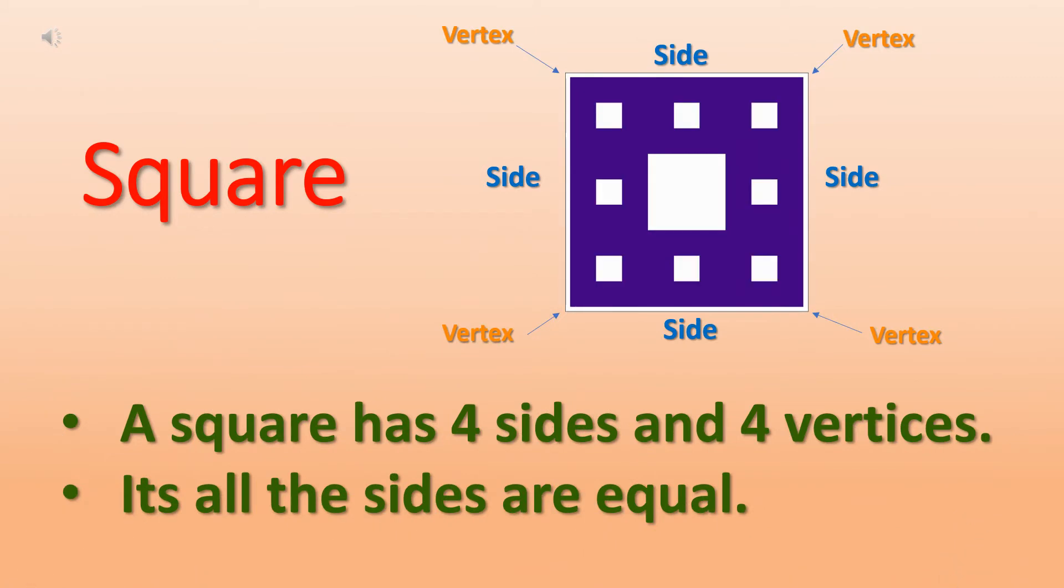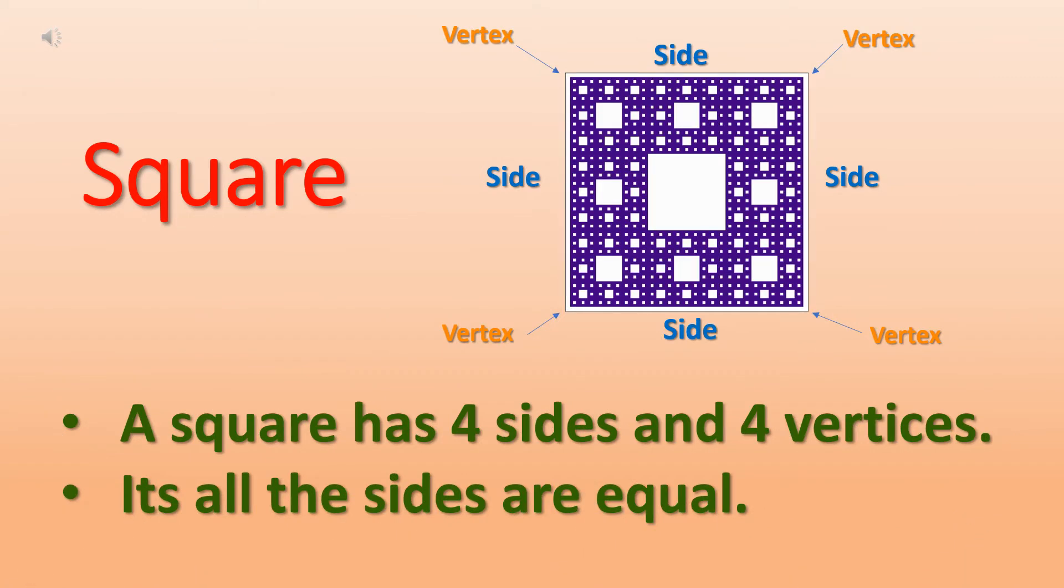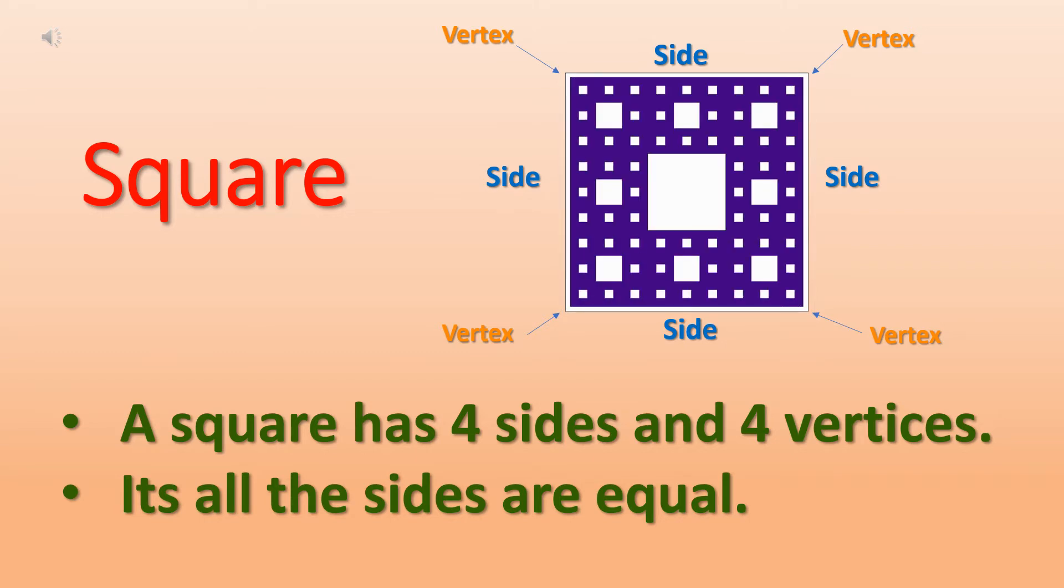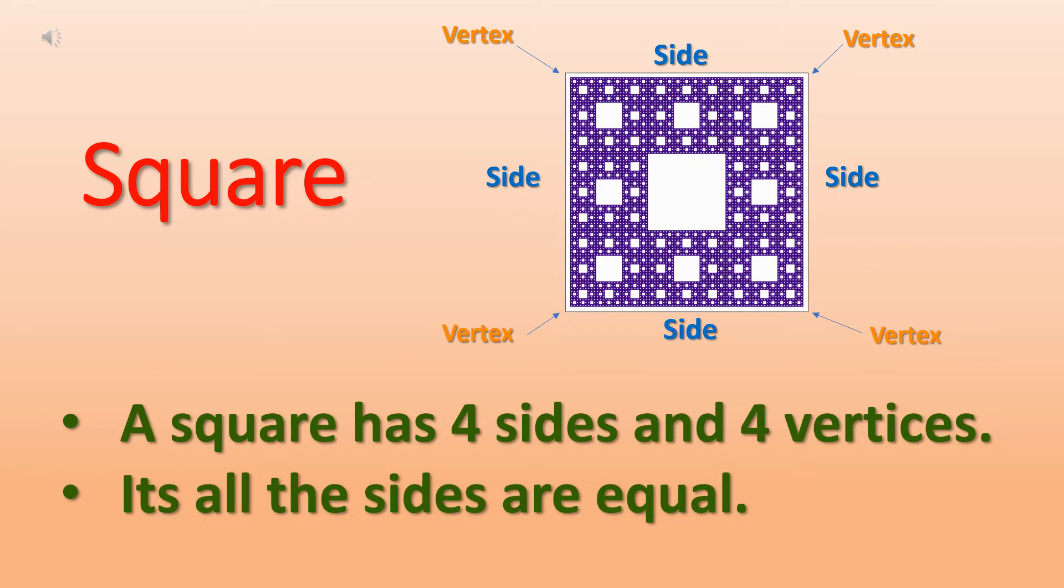Our next 2D shape is square. A square also has 4 sides and 4 vertices. And all sides of a square are always equal.